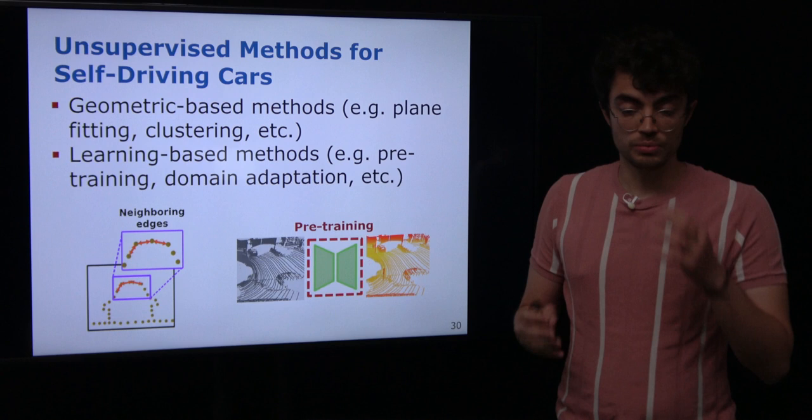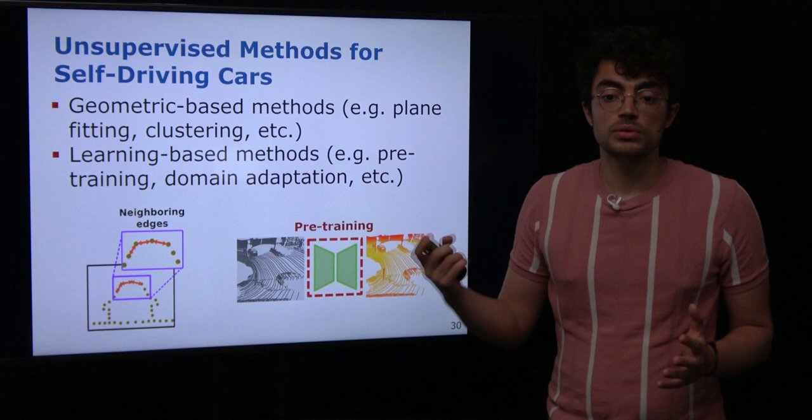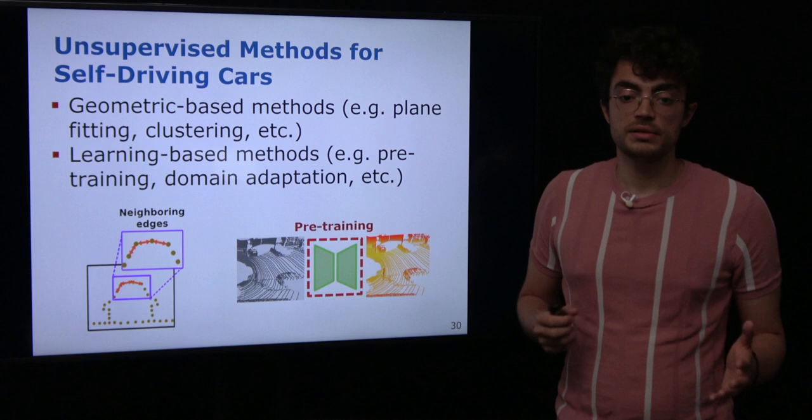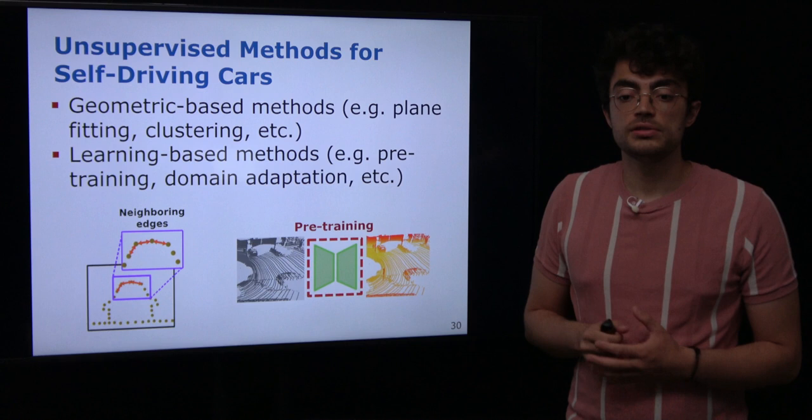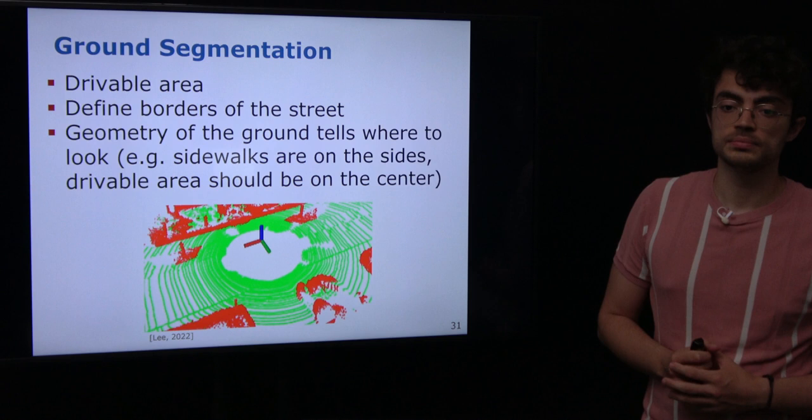In this self-driving cars context, especially with LiDAR sensors, we can divide unsupervised perception methods into geometry-based methods or learning-based methods. Depending on the task we want to achieve, each has advantages and disadvantages. We will now take a better look at some tasks that can be done using geometric or learning-based methods without using labels — in an unsupervised manner.